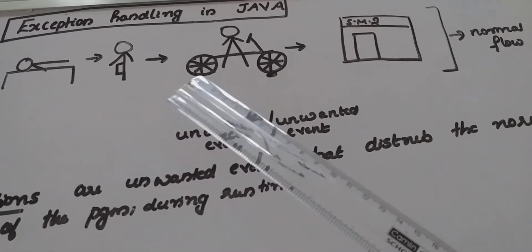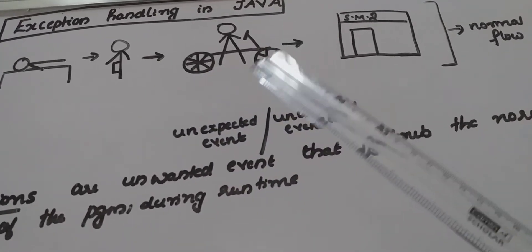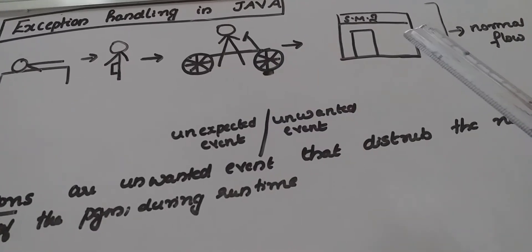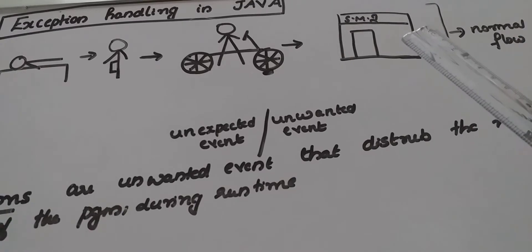Just consider, suppose when he wakes up, dresses up and takes his bike, suddenly rain comes. At that time also he can't reach the institute at the right time. So this is known as exception.